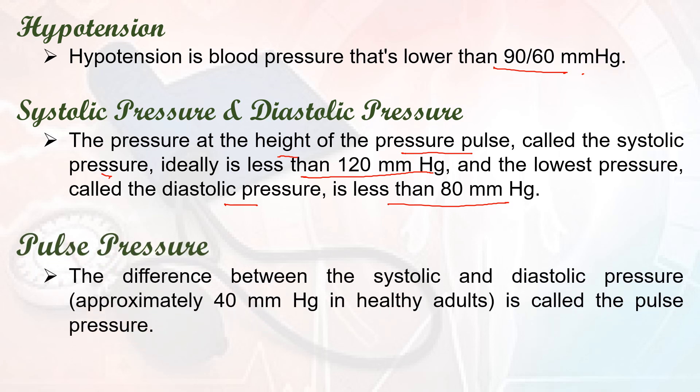Next, what is pulse pressure? Pulse pressure is defined as the difference between the systolic and diastolic blood pressure. The normal pulse pressure is 40 mmHg for a healthy adult. So the difference between systolic and diastolic pressure is known as pulse pressure.